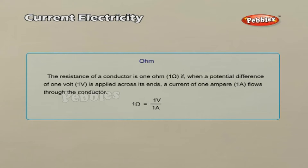Ohm Definition: The resistance of a conductor is 1 Ohm if, when a potential difference of 1 volt is applied across its ends, a current of 1 ampere flows through the conductor. That is, 1 Ohm equals 1V divided by 1A.